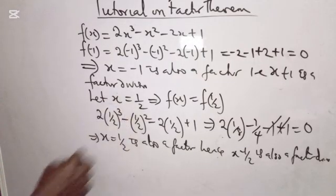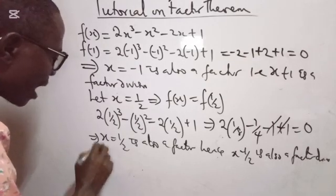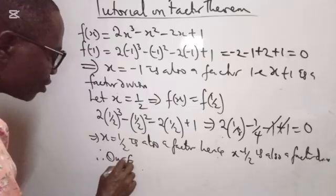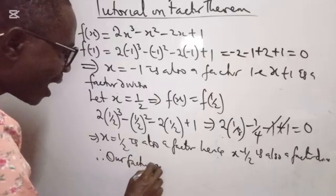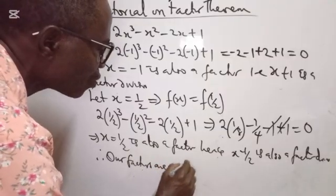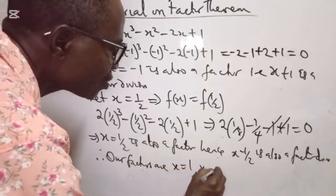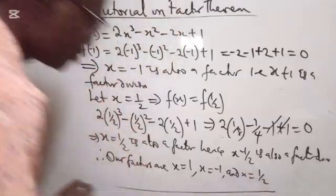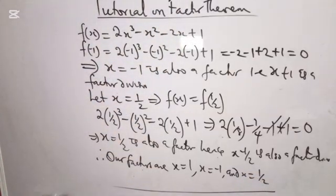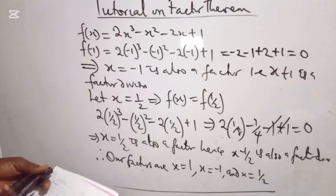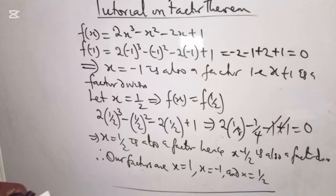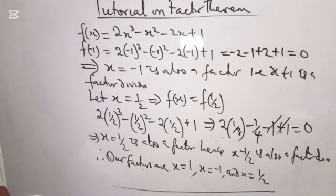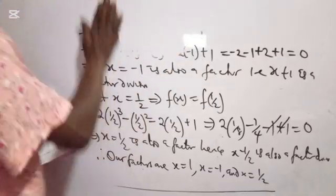Therefore our factors are: x equals 1, x equals minus 1, and x equals 1/2. These are the three factors for this polynomial. If you use any of them to divide the polynomial function, the result will be 0.